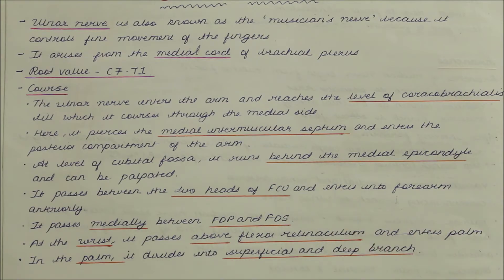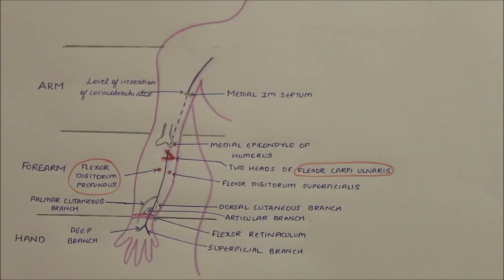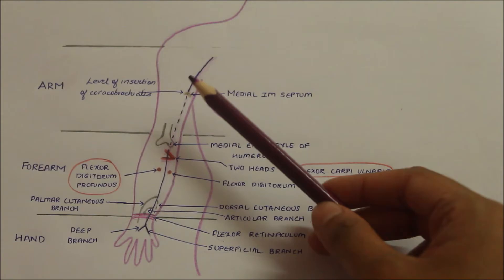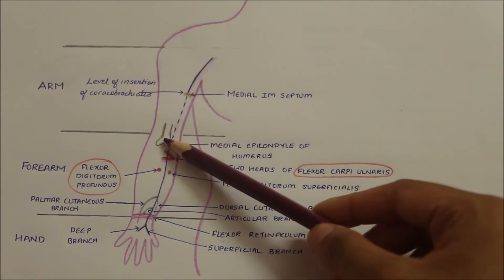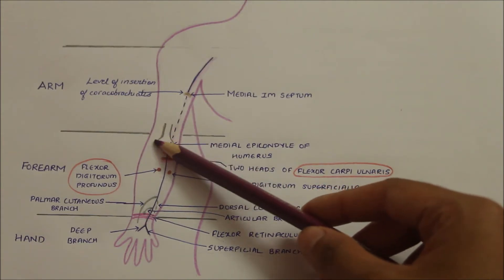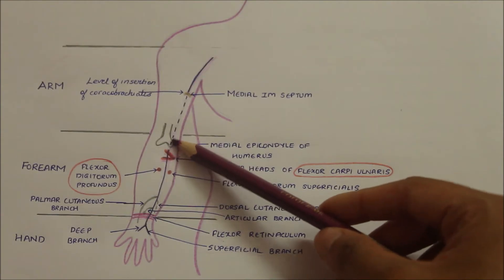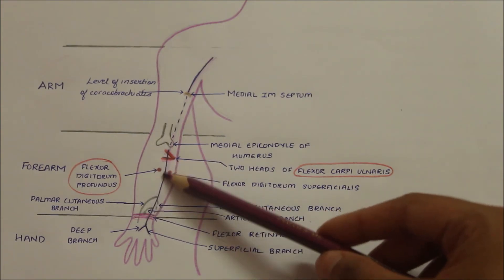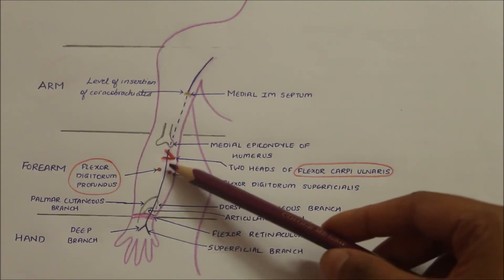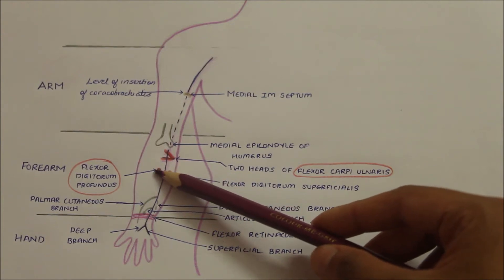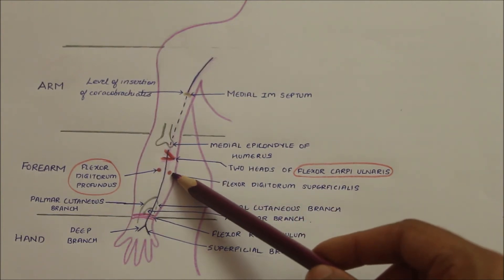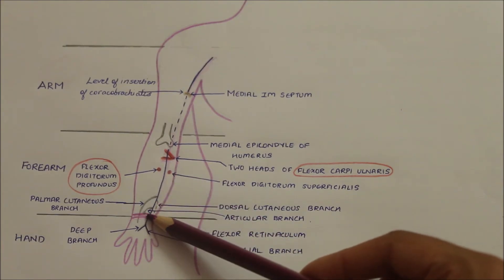Looking at the relations of the ulnar nerve: in the arm it runs medially. At the level of the cubital fossa it is present behind the medial epicondyle. In the forearm it is present anteriorly, between the flexor carpi ulnaris and between the flexor digitorum profundus and flexor digitorum superficialis. At the wrist it lies anterior to the flexor retinaculum.